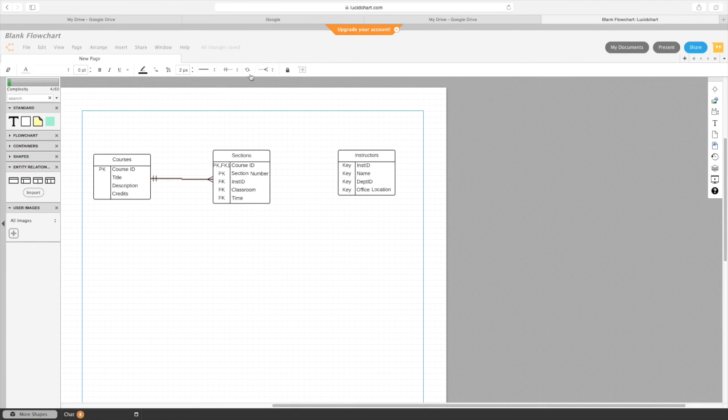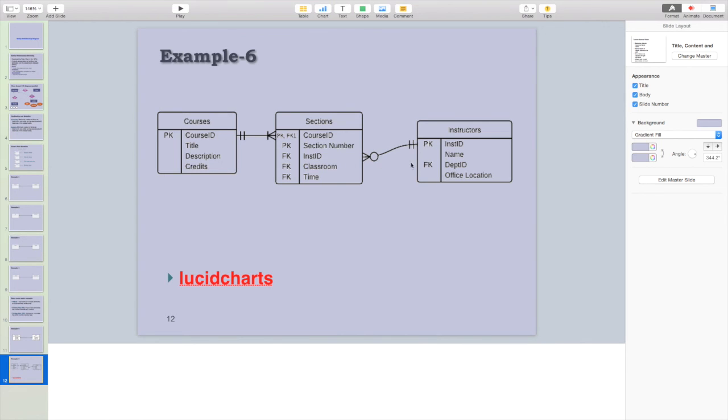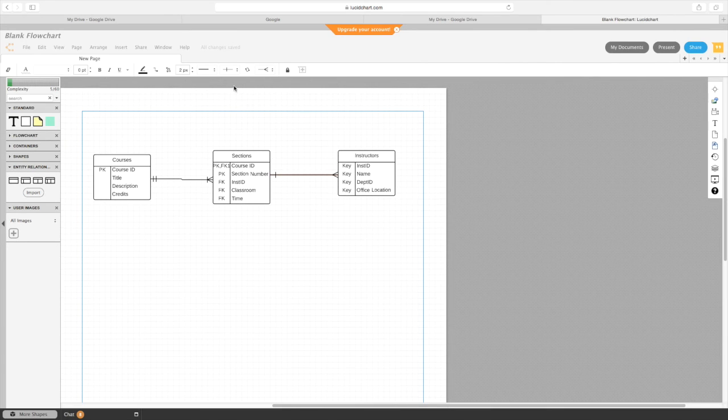Because this is on the right side, you should use this one to change anything here. This is one and many. Similarly, draw a line between these two entities. So zero and many, one and only one. This should be zero and many and this should be one and only one.